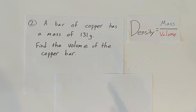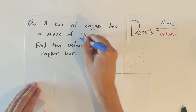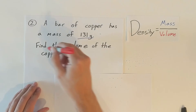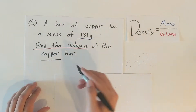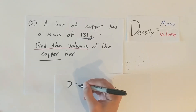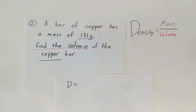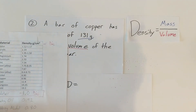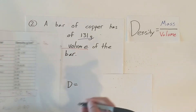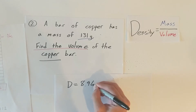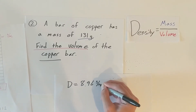A bar of copper has a mass of 131 grams. Find the volume of the copper bar. We know the mass is 131 grams and we're looking for the volume. Since it's copper, we can look at our table — copper has a consistent density if it's pure copper — so its density will be 8.96 grams per milliliter.